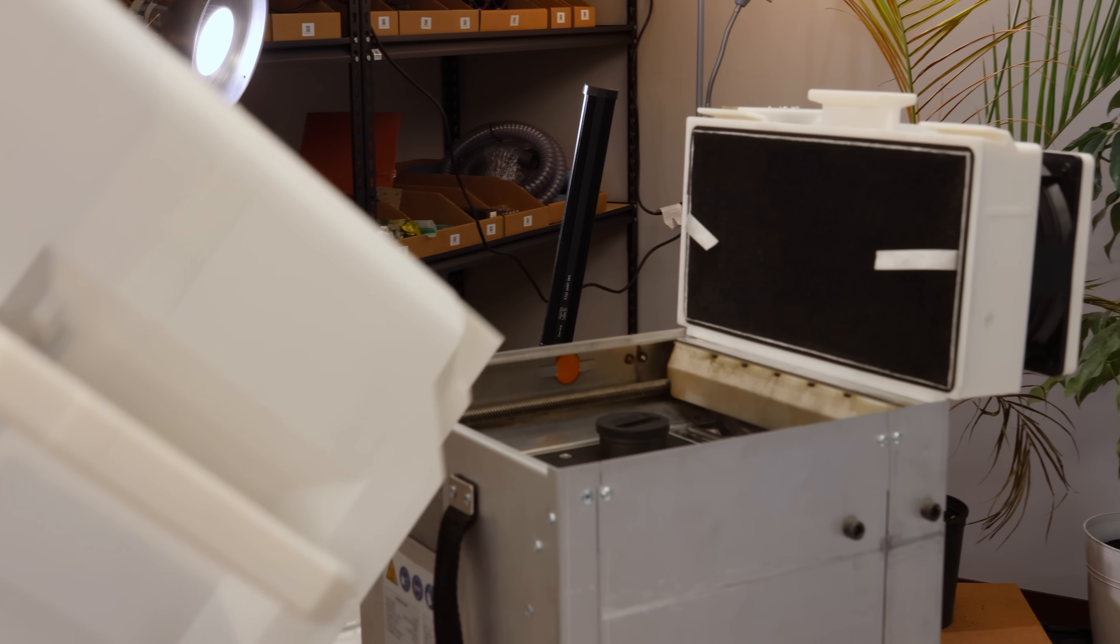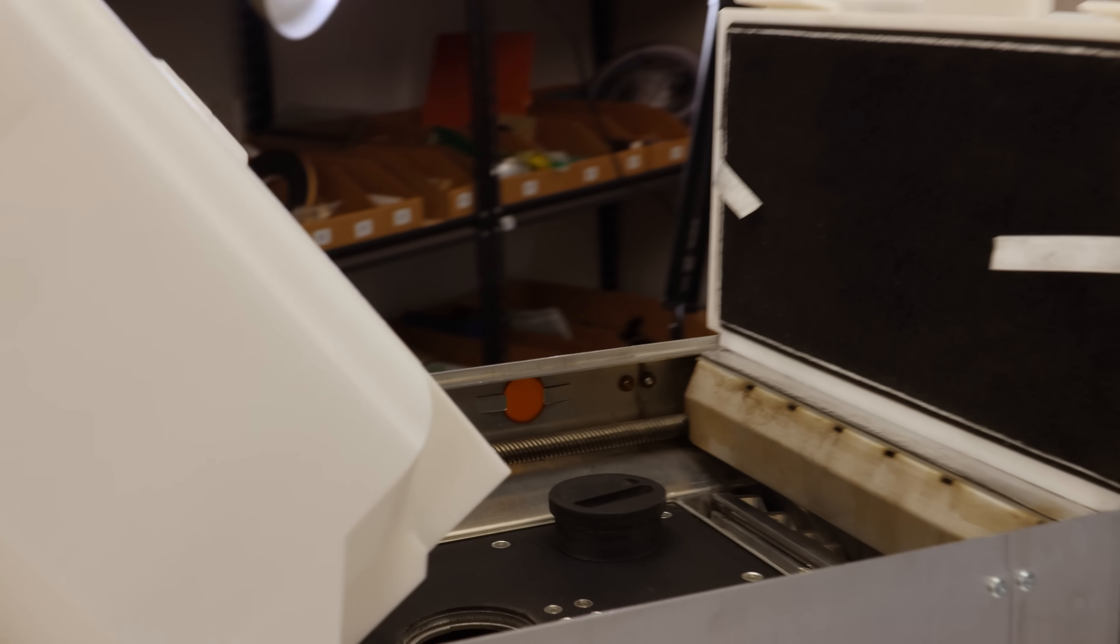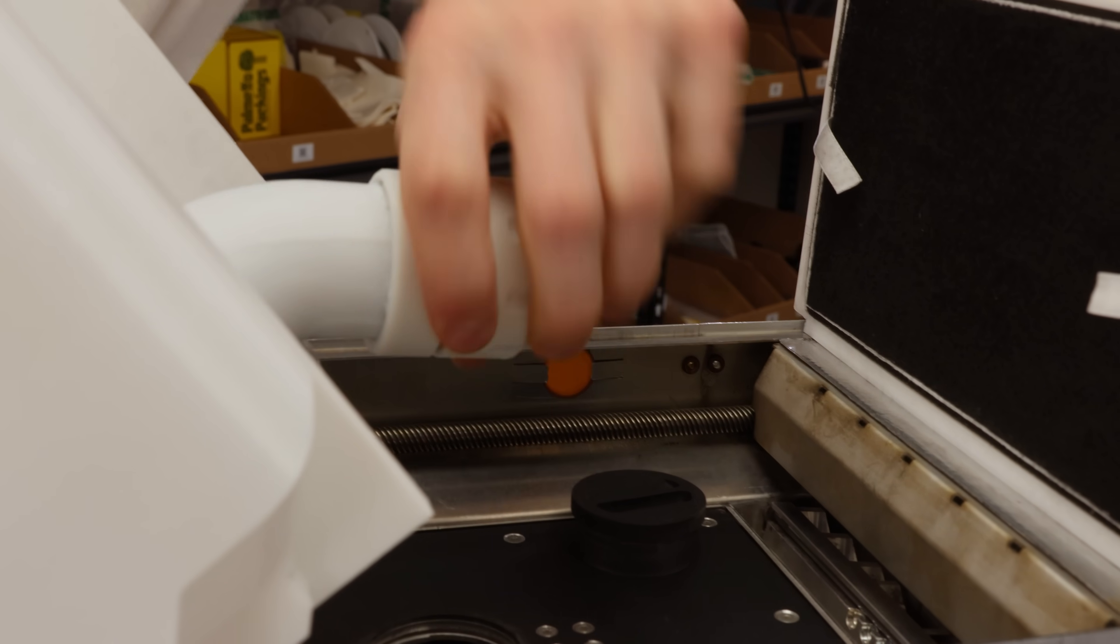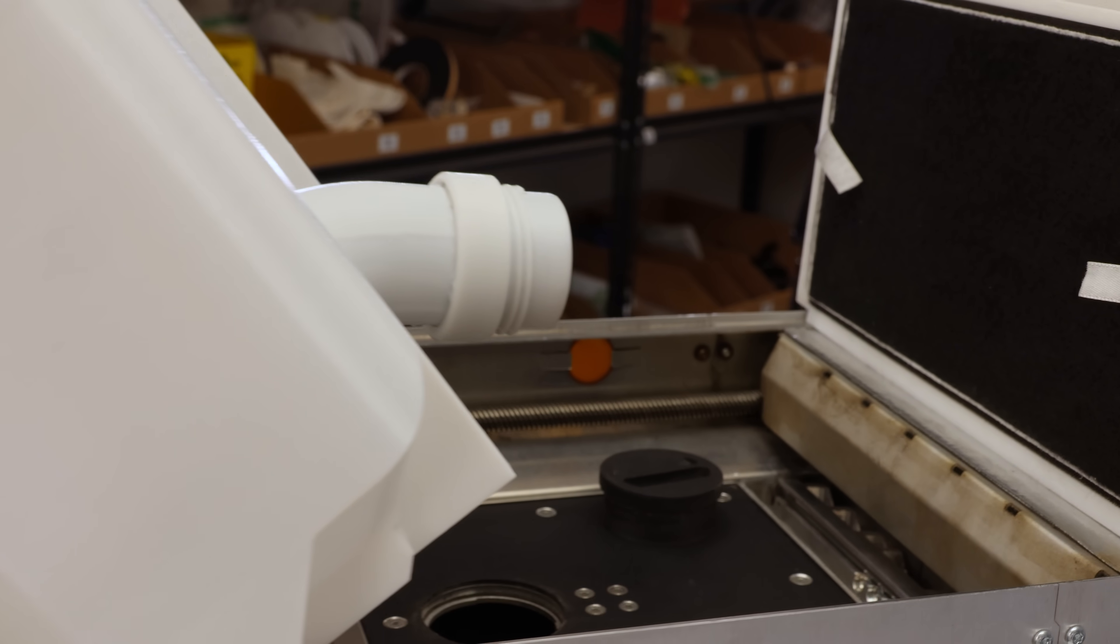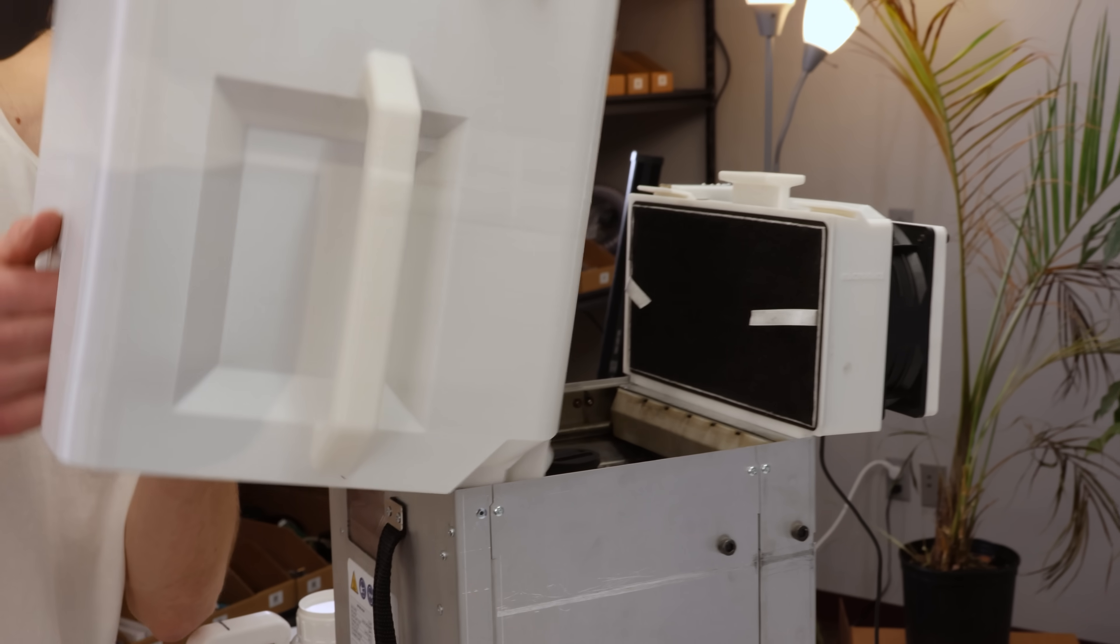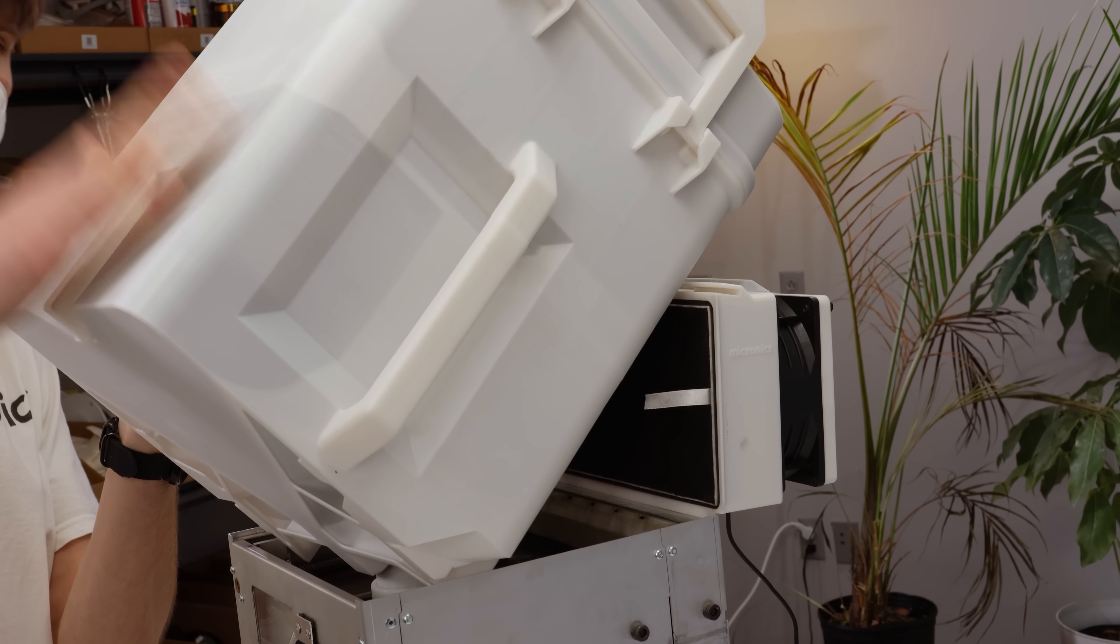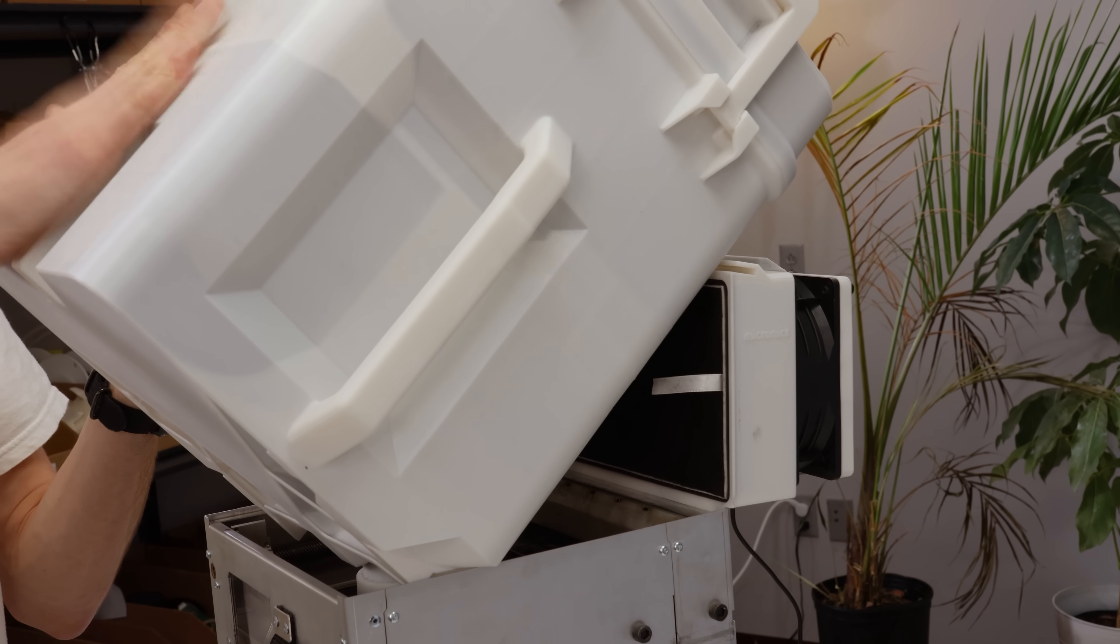Then, take the sift bin, rest it on the edge of the build chamber, turn the spout down, open the cap, and tip it forward. A gentle tap on the bin will help the powder flow smoothly into the chamber. This process should take about a minute.